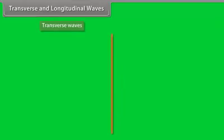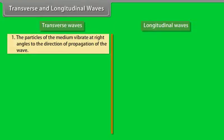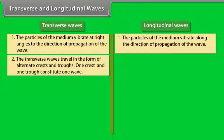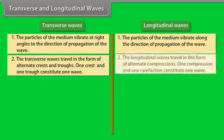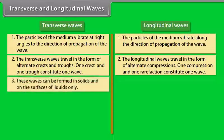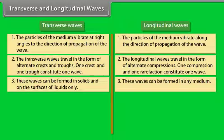Let's make the difference between transverse waves and longitudinal waves. Number 1: In transverse waves, the particles of the medium vibrate at right angles to the direction of propagation of the wave, whereas in longitudinal waves, the particles vibrate along the direction of propagation. Number 2: Transverse waves travel in the form of alternate crests and troughs — one crest and one trough constitute one wave — whereas longitudinal waves travel in the form of alternate compressions and rarefactions — one compression and one rarefaction constitute one wave. Number 3: Transverse waves can be formed in solids and on the surface of liquids only, whereas longitudinal waves can be formed in any medium.